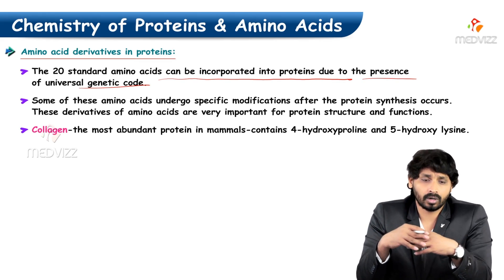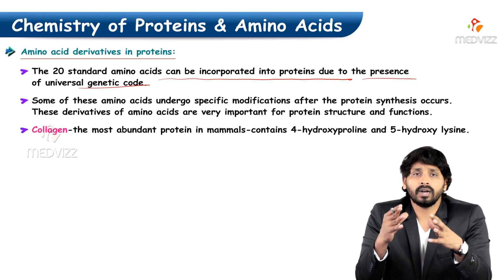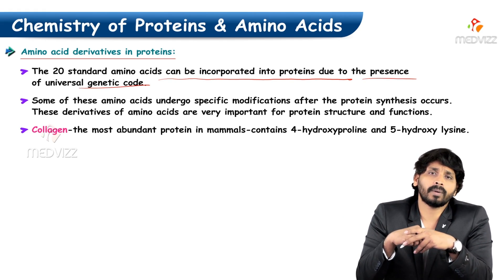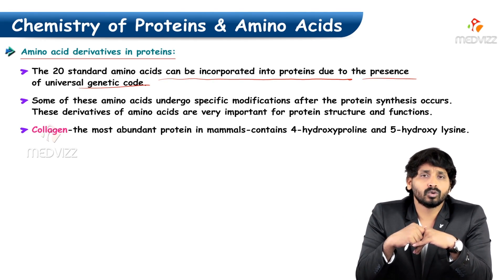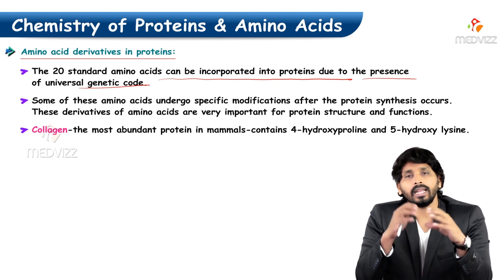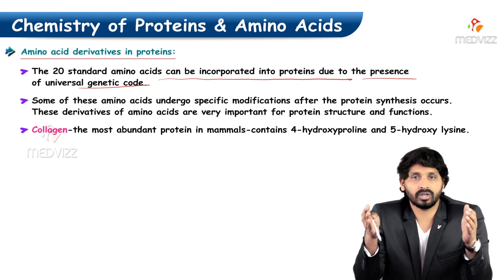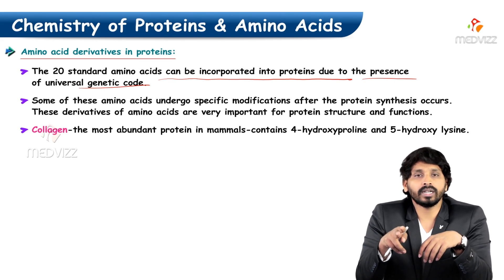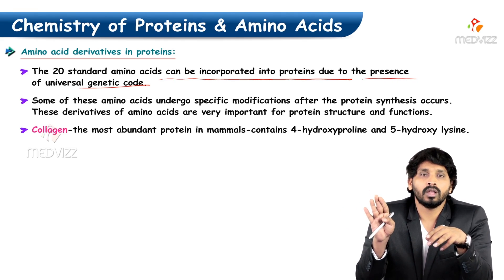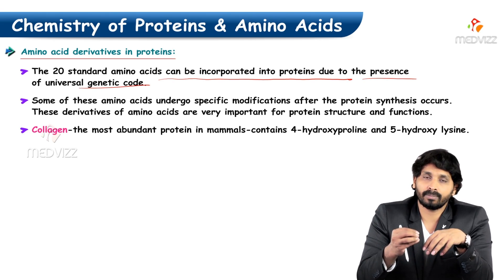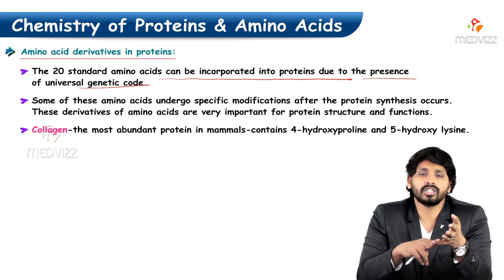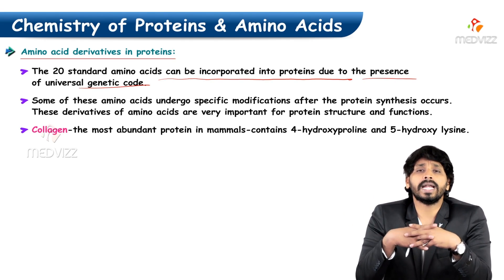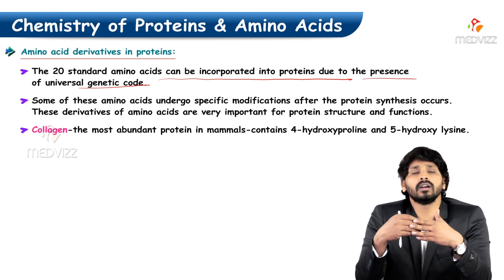Once a protein is synthesized, consider a movie that was shot for 4 hours but the final release is 3 hours — they remove unnecessary scenes and add interesting ones to make the screenplay gripping. Similarly, when any protein is synthesized, not all protein molecules will be functional. So there is an editing mechanism: any unwanted part is cut and removed, and anything needed for function — such as addition of a phosphate group, carbohydrate, nitrogen group, or hydroxyl group — is added. These amino acids will be modified.